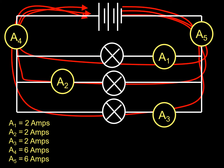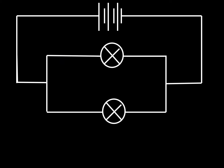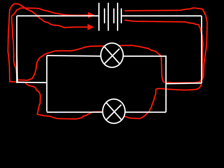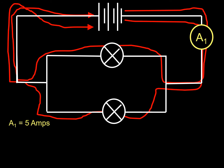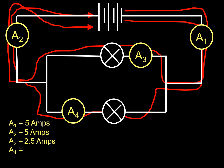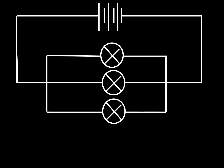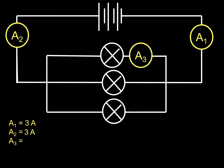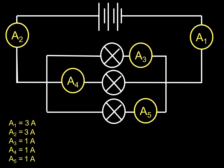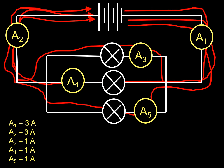Each of those bulbs has 2 amps going through it — they've all got 2 amps. That's why they keep their brightness, because they've all got an equal amount of current going through them. The shape of the circuit doesn't really matter — we can still see things are splitting up. If that's 5 amps, it's 5 amps there, then 2.5 amps in each branch. The current always just splits up. As long as it's 3 bulbs with 1 in each parallel branch, they're all going to have the same amount of current going through them.